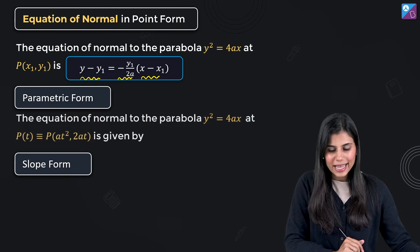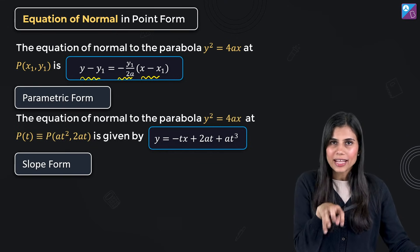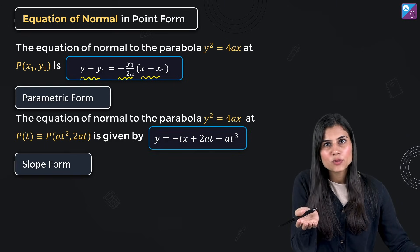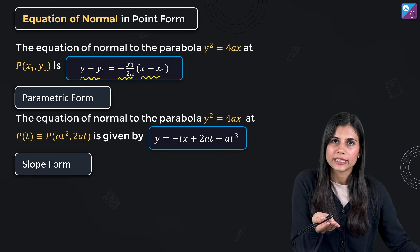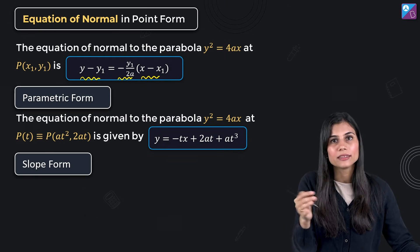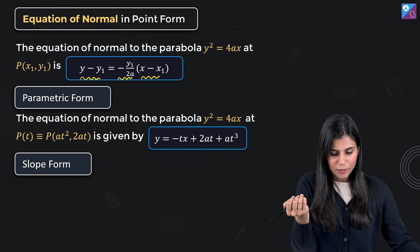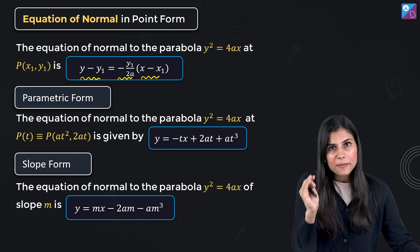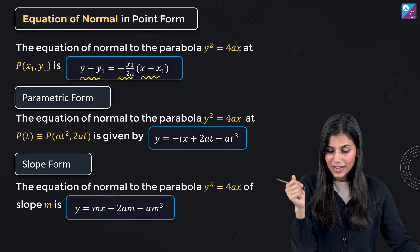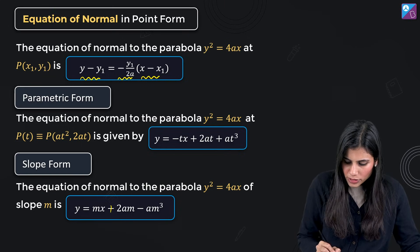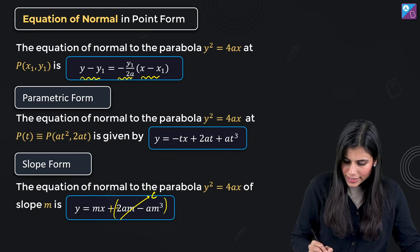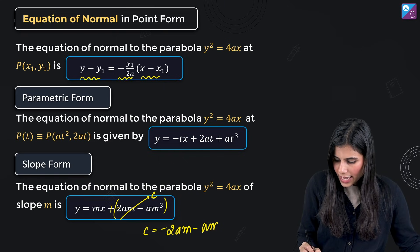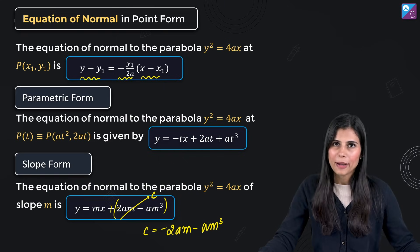For the parametric form, use the same point form logic but replace x1 with at² and y1 with 2at to get the normal equation in parametric form. For the slope form, y = mx + c is a normal to y² = 4ax provided c = -2am - am³.